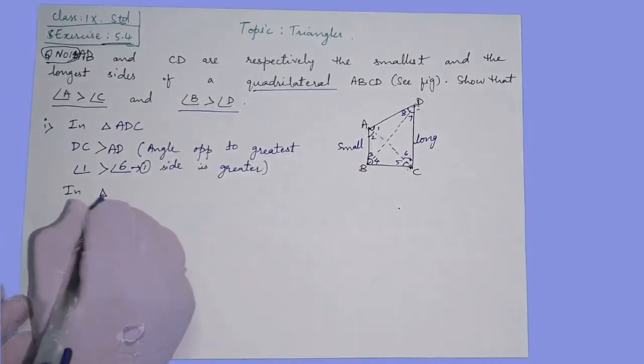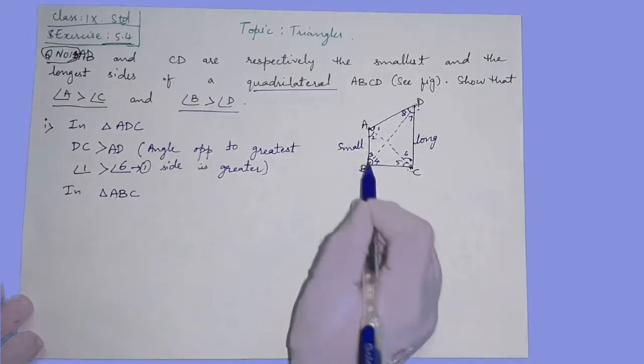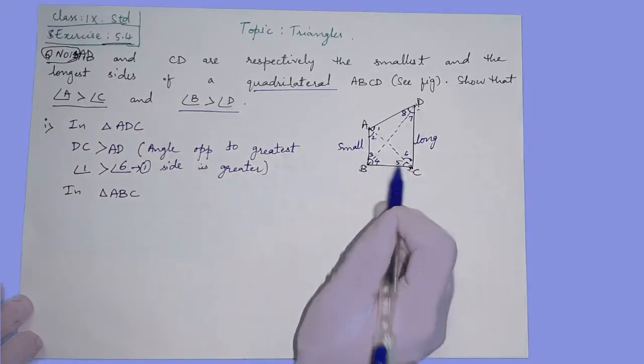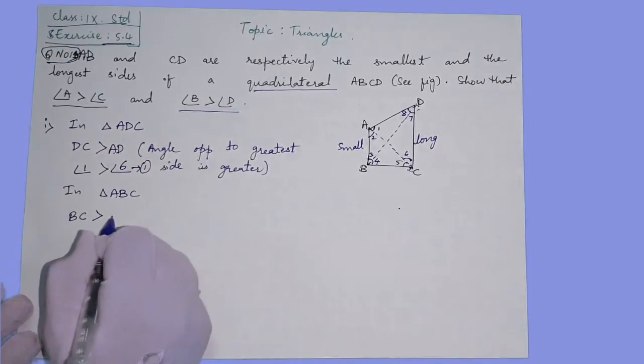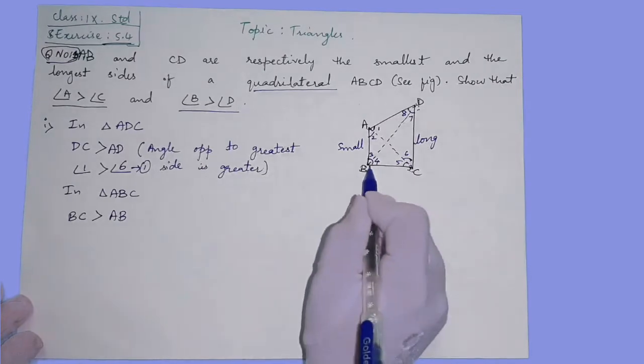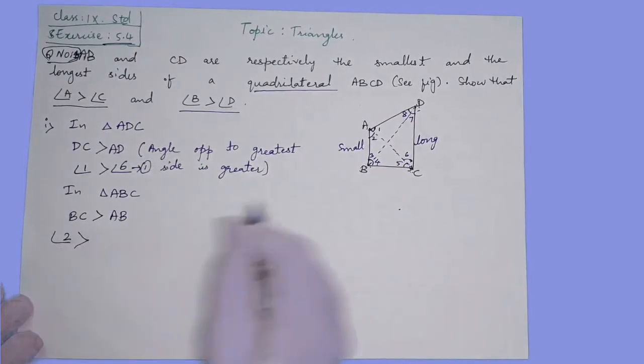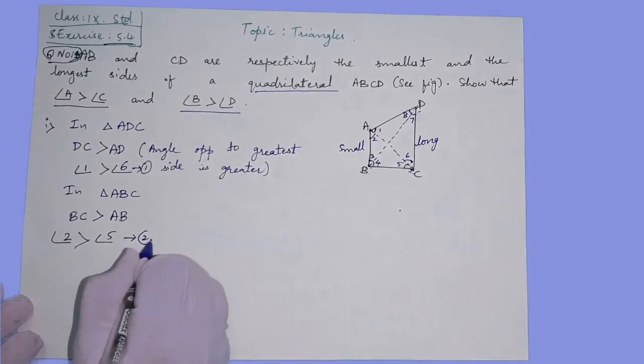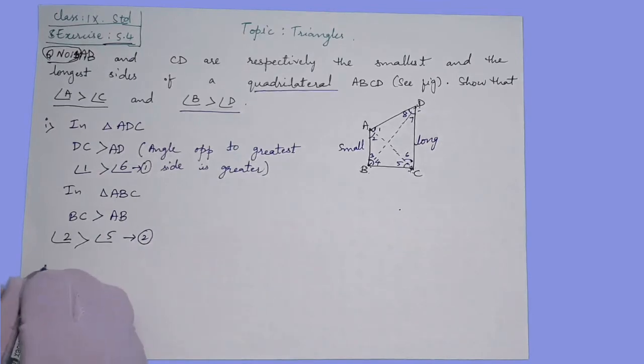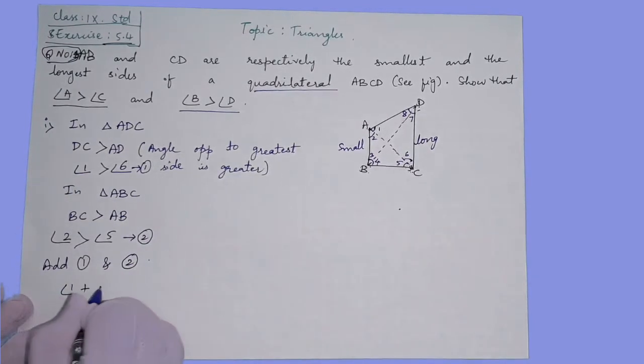In triangle ABC, AB is smallest, so BC will be longer. BC is longer than AB. BC is opposite angle 2 and AB is opposite angle 5. This we can name as equation 2. Then again, add 1 and 2. Angle 1 plus angle 2.